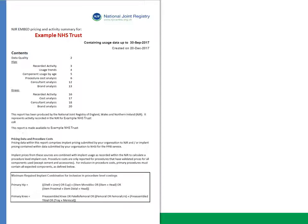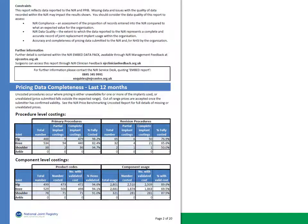Here's a sample report that a trust can download through the management feedback system. The first thing that the report shows is the completeness of pricing data provided to the NJR. In the case of this example trust it's pretty good, showing 98% of all hip procedures and 82% of knee procedures can be costed, so we can have confidence that the prices we see are representative of the trust. Where we have a low percentage, it will mean that prices have not been provided to the NJR, or that the prices provided need to be validated as they've been flagged at the point of loading as being outside of the expected range.